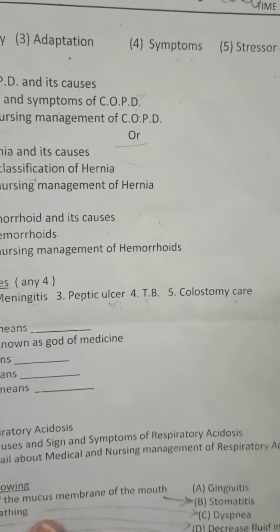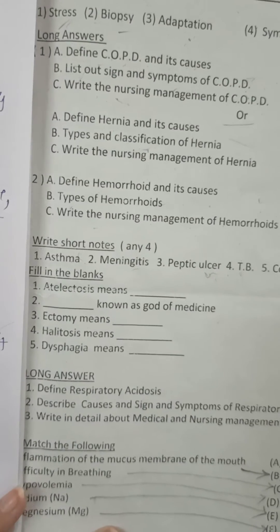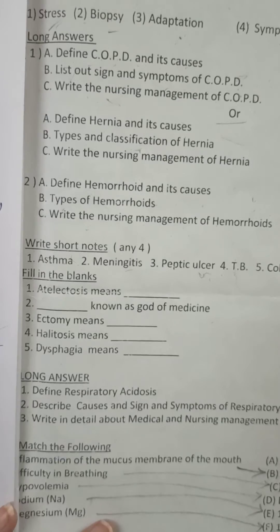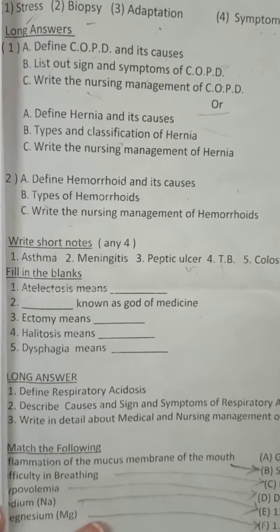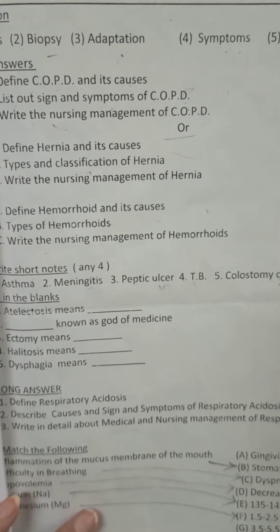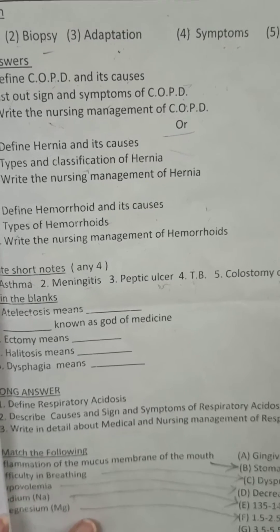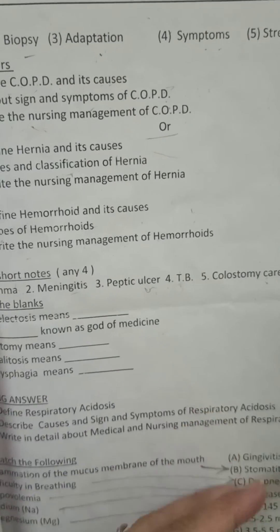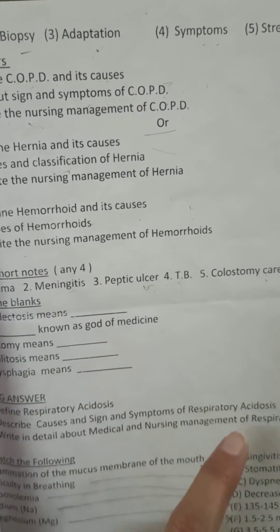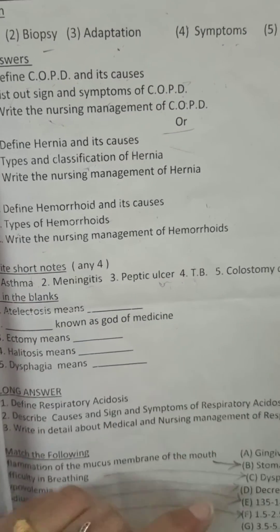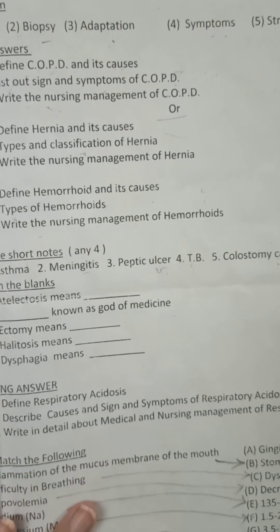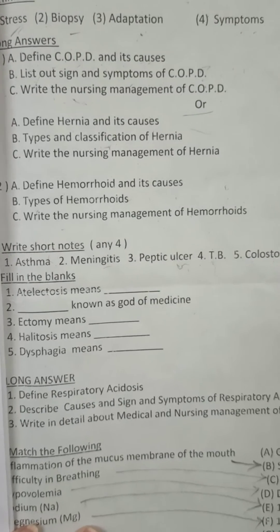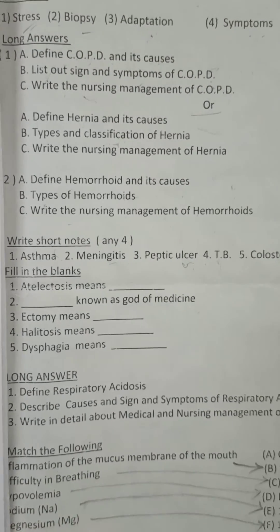Next: fill in the blanks. First: atelectasis. Atelectasis is related to the respiratory system and lungs. The meaning of atelectasis is a complete or partial collapse of the entire lung or any part of the lung.